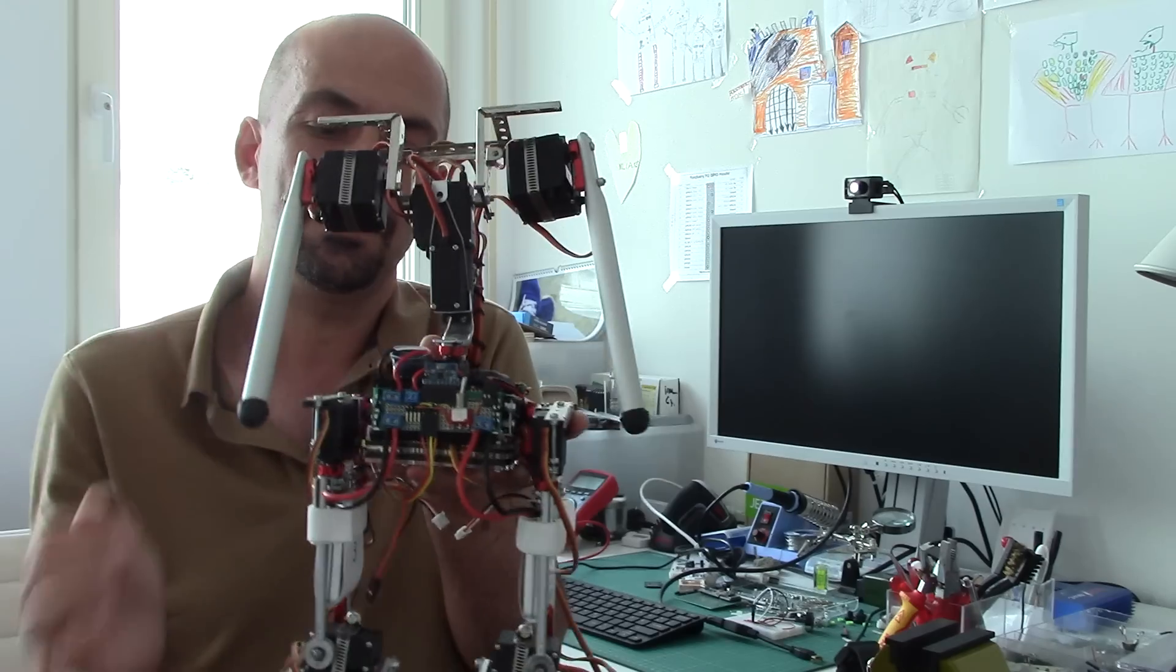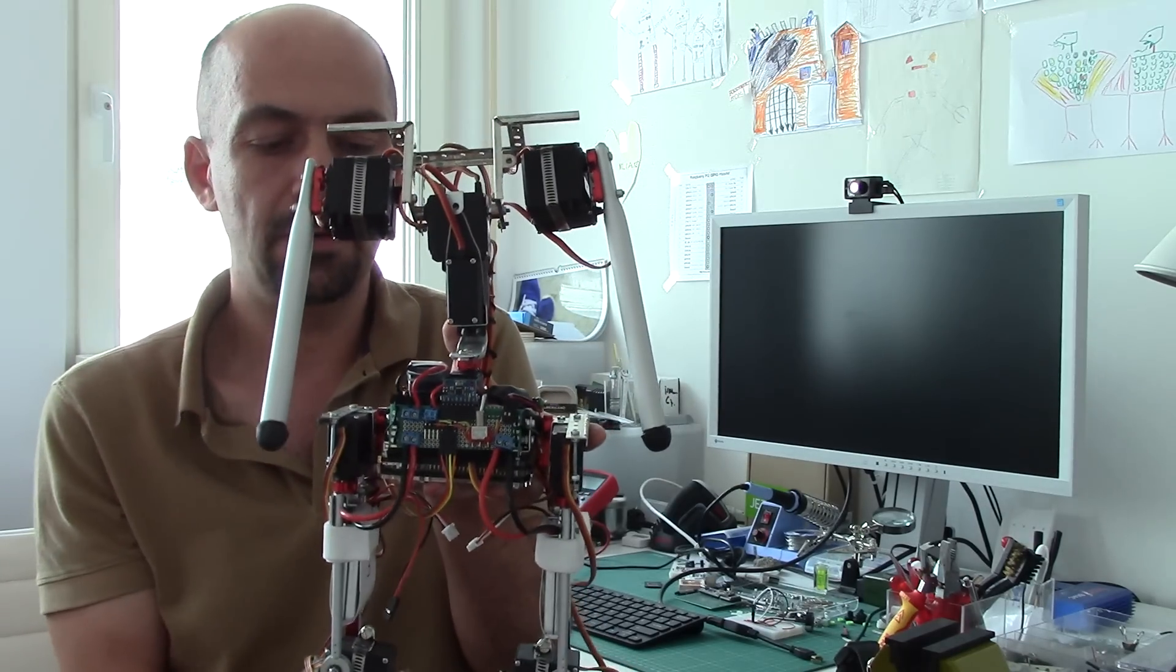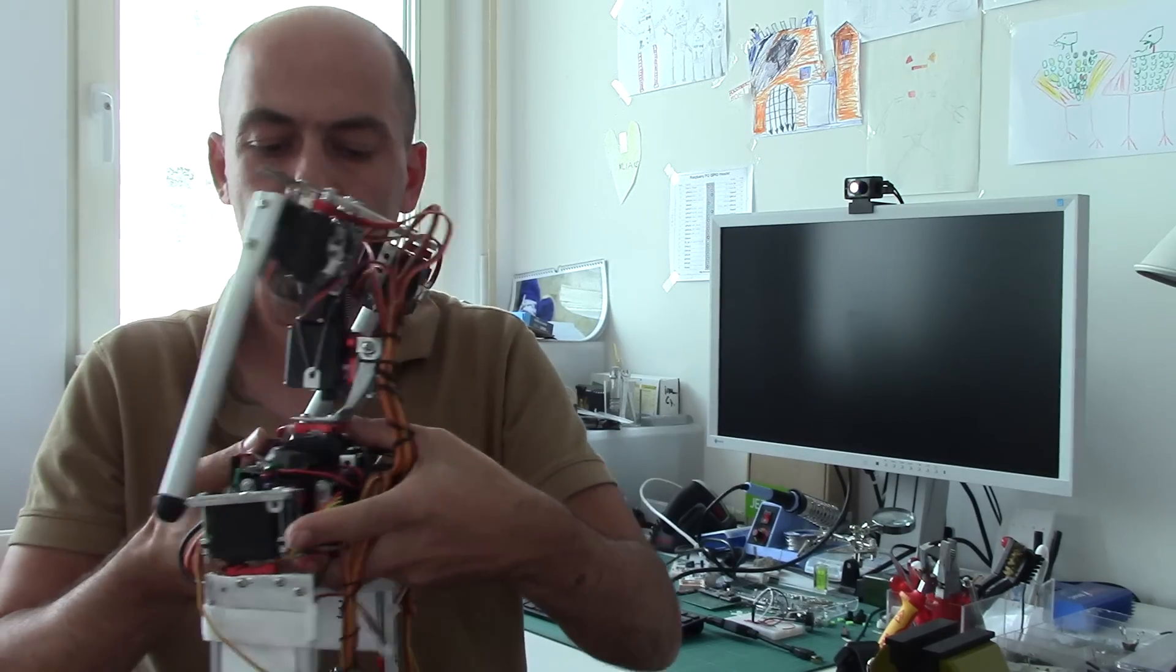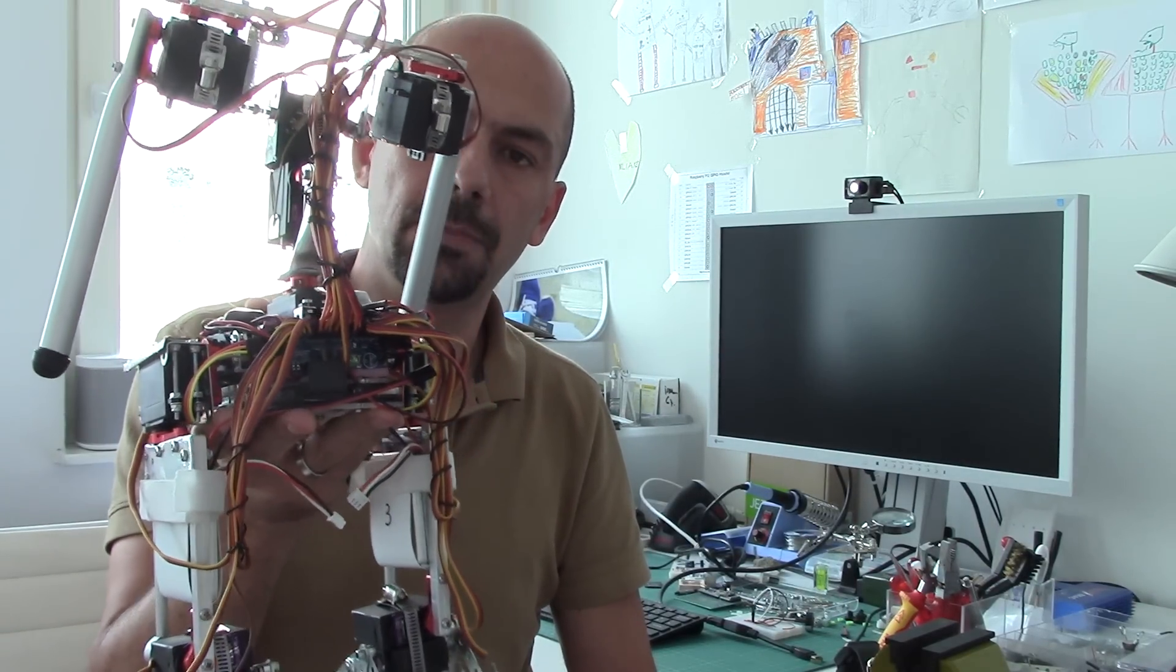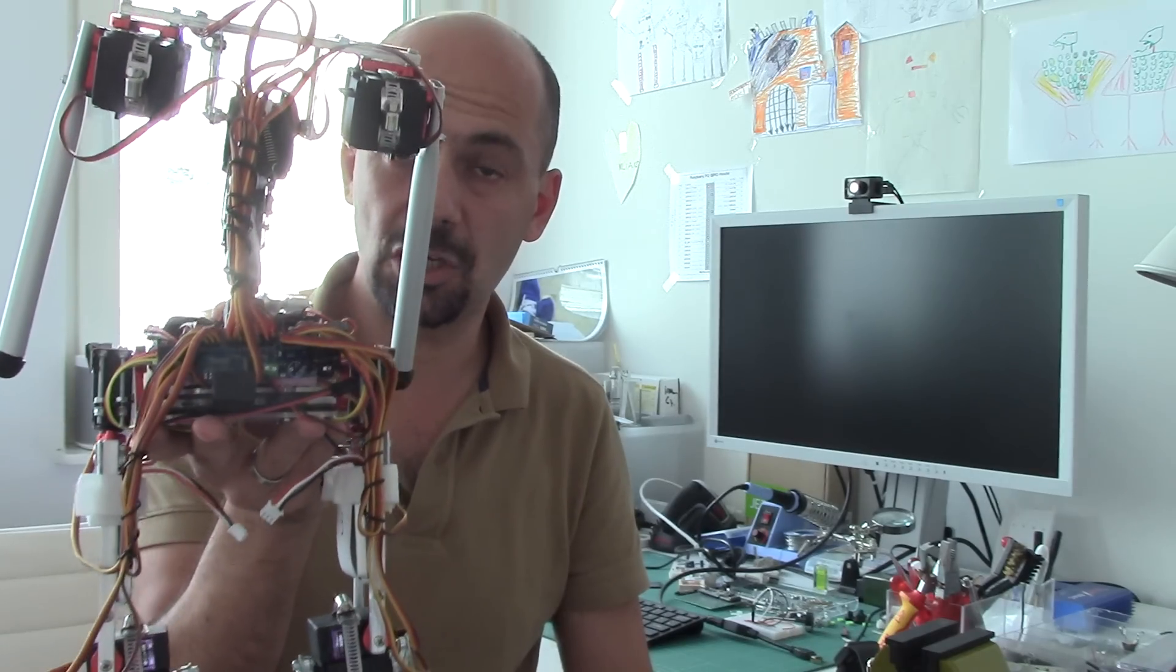And the second step-down converter feeds into the new servo control board here. The servo control board was necessary because the Raspberry Pi is not very good at I/O. So it's controlling all of the servos here.